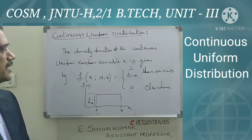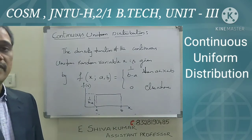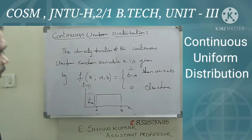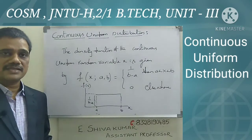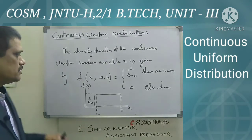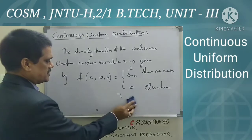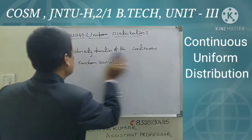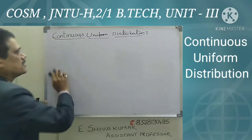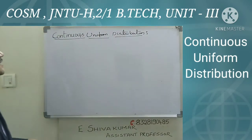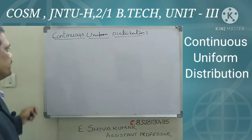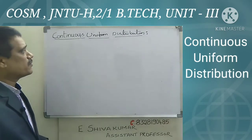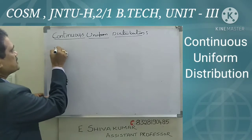Now we are going to learn the mean and variance of the continuous uniform distribution. You already know the meaning of mean and variance from discrete distributions. We have formulas using the expectation expression. I am going to find the constants mu and sigma-squared in the uniform distribution, starting with the mean.